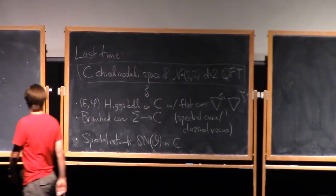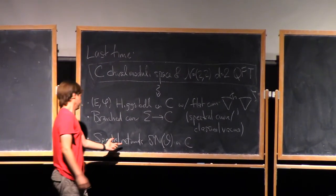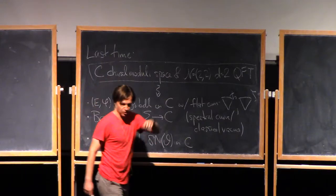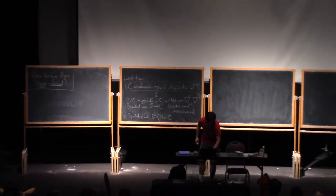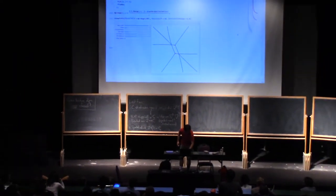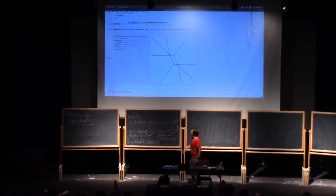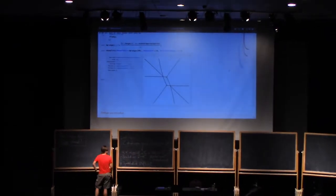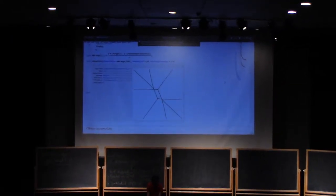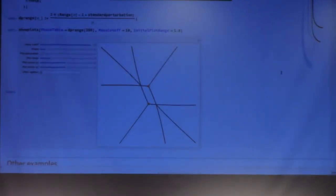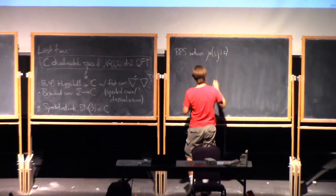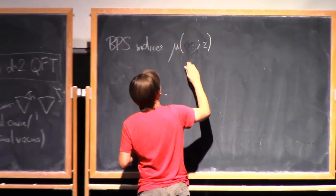Anyway, we had a branch cover, and then I described for you an algorithm for drawing something called a spectral network on C. Where's the picture? This is a picture of that. This is the one that we talked about at some length, coming from a family of quartic polynomials. And I guess the last thing to say about that spectral network is its purpose, as we introduced it, was to compute these BPS indices, mu of a and z.